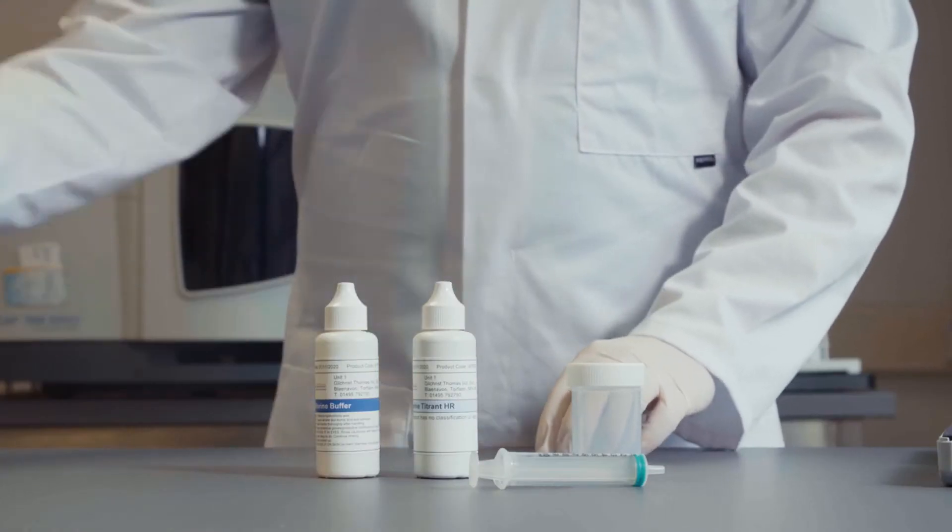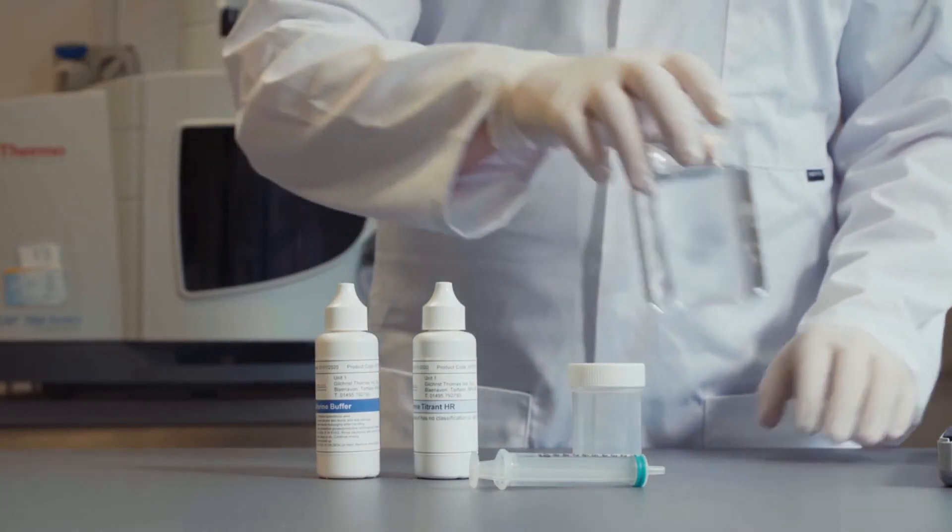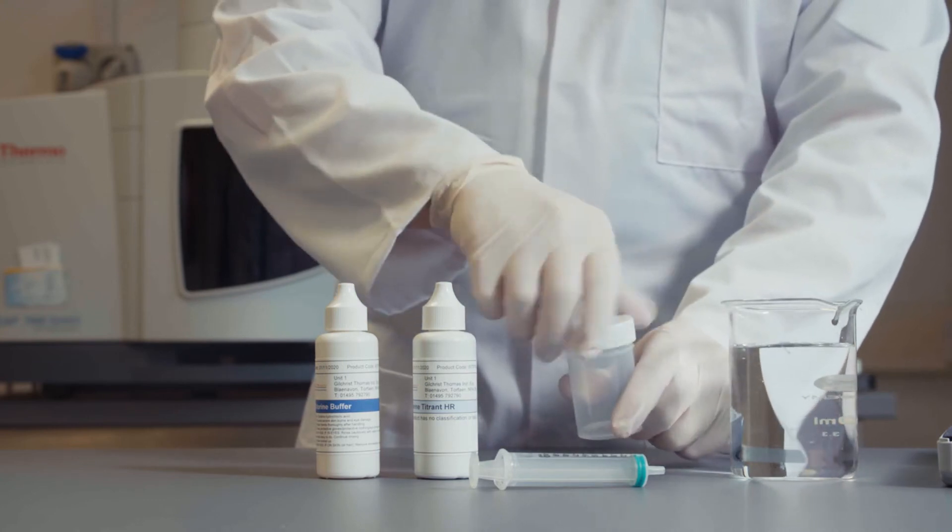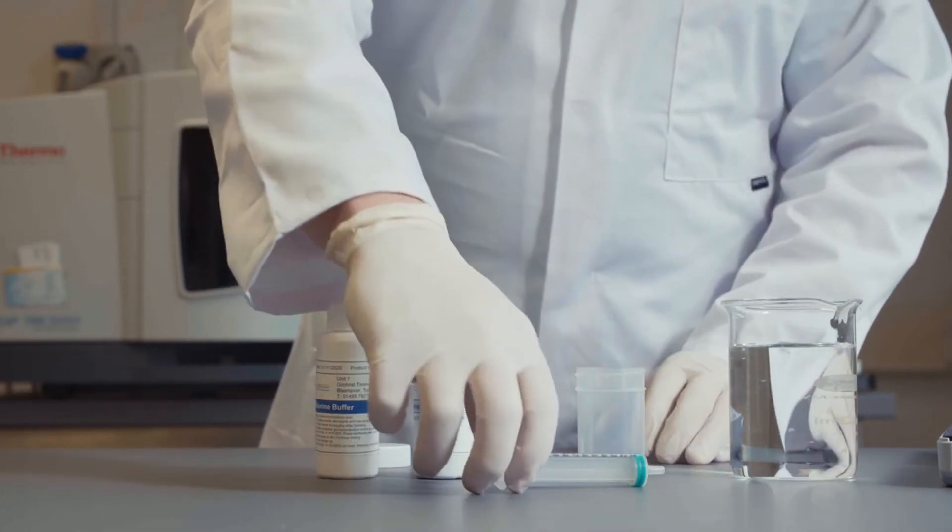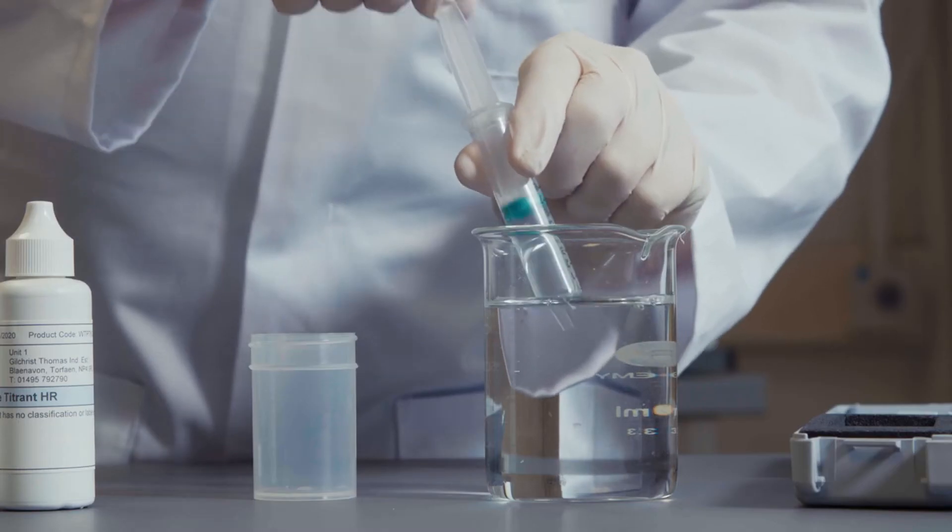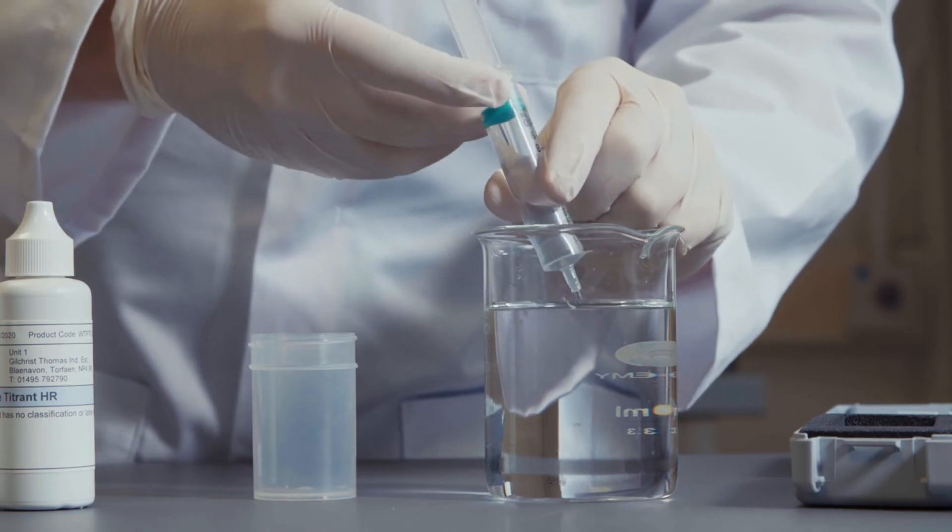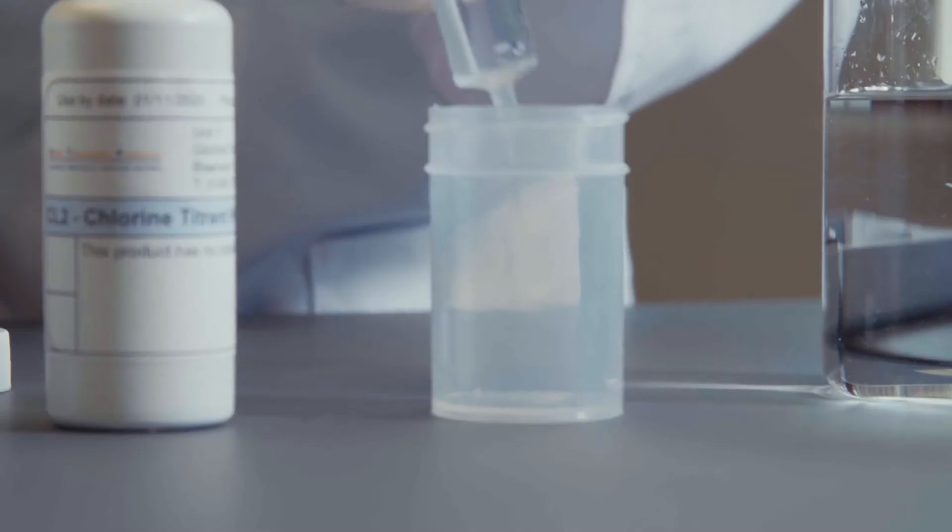Collect your sample for testing. Using the 10ml syringe, transfer 20ml of sample to the sample pot. This allows you to precisely measure the amount of sample required for testing.